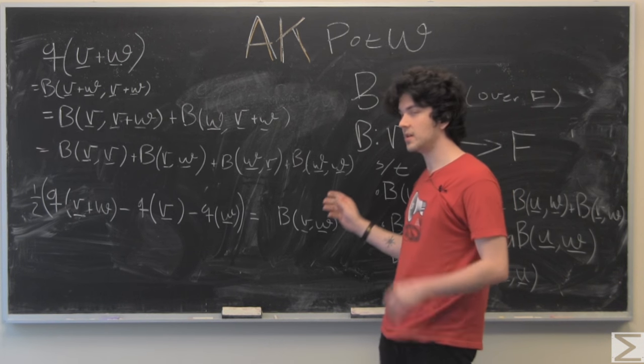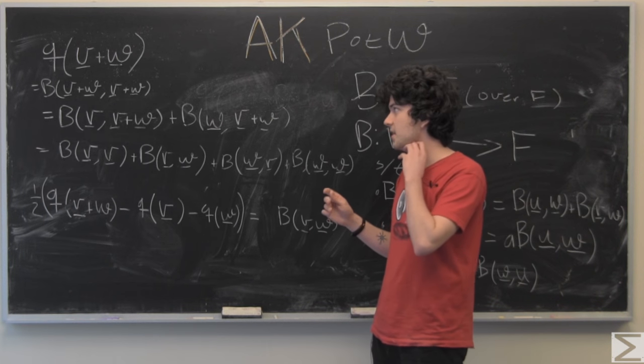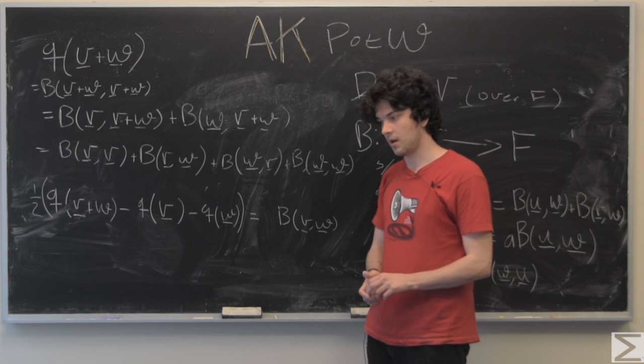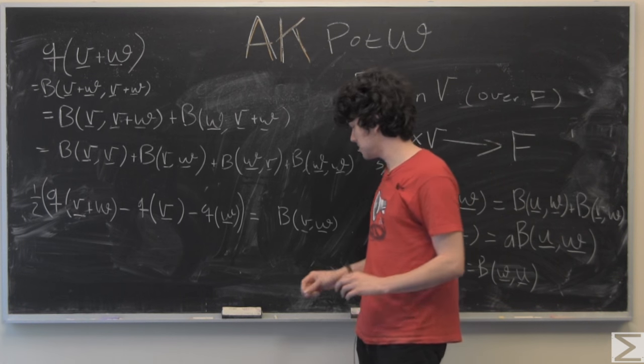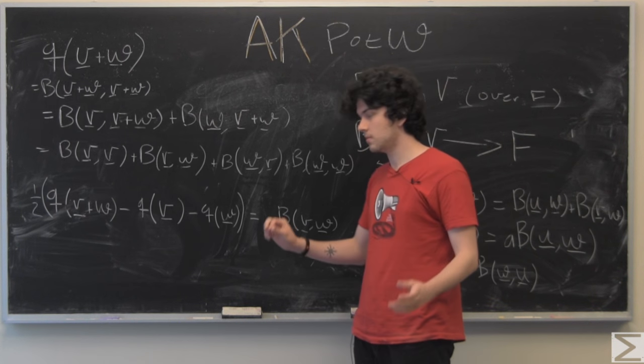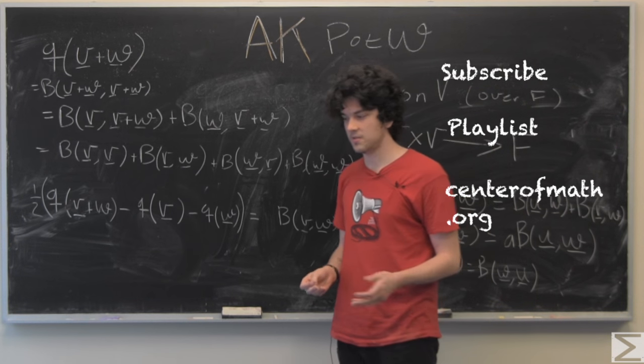So we can now transition between quadratic and bilinear forms if we know all the quadratic forms in our vector space. So, thank you for watching. That's it for this video.